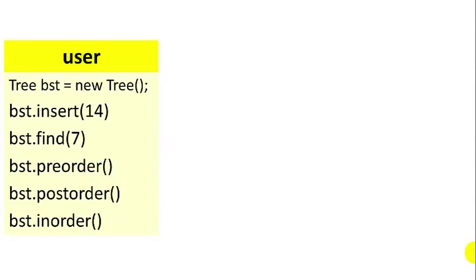First we'll look at what methods we're going to need from the user's perspective. The user is going to want to instantiate a new binary search tree, insert items, find an item, and do a pre-order, post-order, and in-order traversal. He'll also want to delete items, but we're not going to do that in this video.